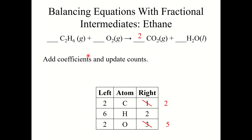Next, I'm going to go to hydrogen. I've got six hydrogens on the left side, so I need to place a three in front of H2O to balance this out. Now I've got six hydrogen atoms on both sides. But you'll notice there's a bit of a problem here. After placing that three in front of H2O, I have seven oxygen atoms on the right side and two on the left.